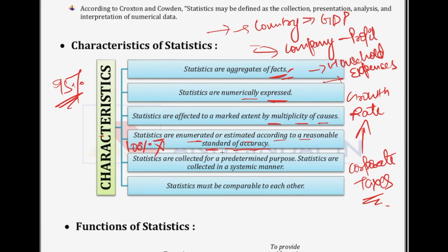Statistics are collected for a pre-determined purpose. There is always some reason or purpose behind collecting statistics. For example, if your parents are maintaining a budget, they do it for decision making — to see whether they can afford to send you on a trip or buy you a new expensive phone. The same goes for countries, where statistics are maintained to take different decisions, and the same for companies.